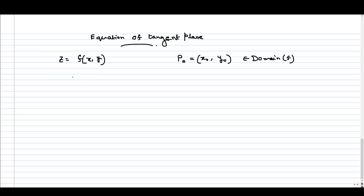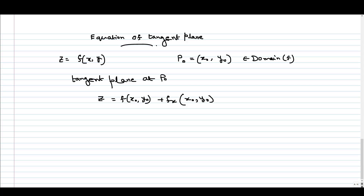The equation of the tangent plane at p0 is given as: z equal to f(x0, y0) — that means the function value of f at point p0 — plus fx(x0, y0), the partial derivative of f with respect to x at the point (x0, y0), times (x minus x0), plus fy(x0, y0) times (y minus y0). This is the equation of the tangent plane at point p0 of the given surface represented by f(x, y).